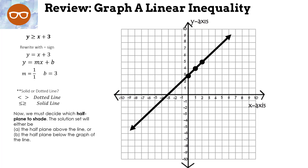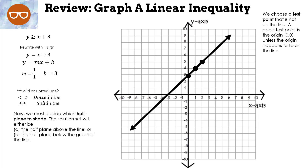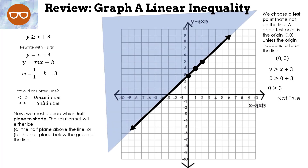Now we must decide which half plane to shade. The solution set will either be the half plane above the line or the half plane below the line. We choose a test point not on the line — a good test point is the origin (0, 0), unless it's on the line. Since (0, 0) is not on the line, we use it. Substituting: 0 + 3 = 3. Is 0 ≥ 3? No, so we do not shade the side containing (0, 0) — we shade the other side.